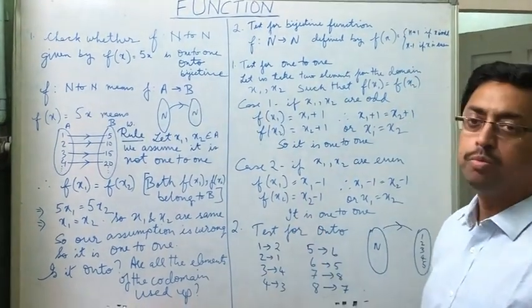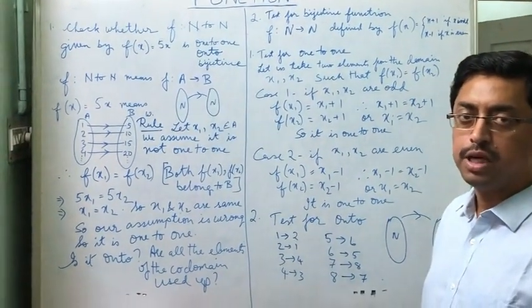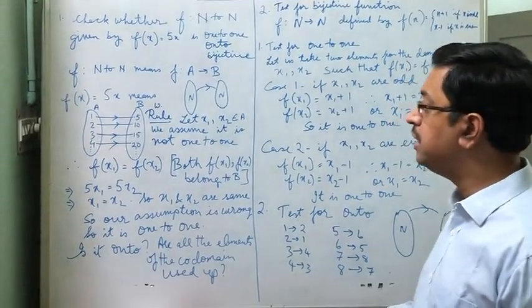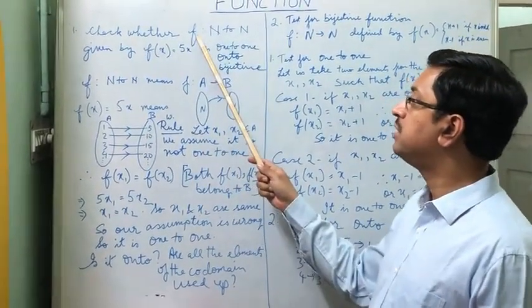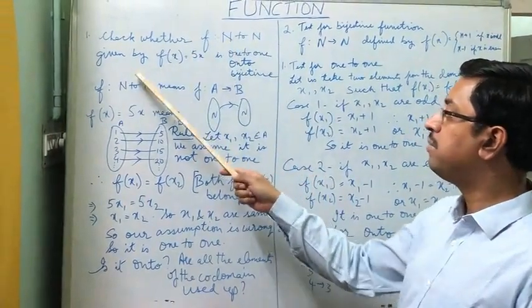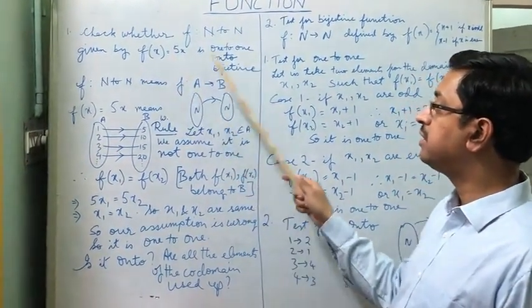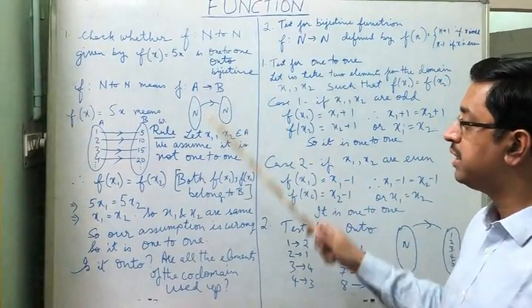We'll be doing two problems on functions to understand what we have just studied in the previous video. We have to check whether the function from N to N given by f(x) equals 5x is one-to-one, onto, or bijective.